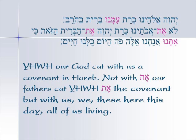In the middle line we're looking at 'Lo et avotenu.' We can't translate this Aleph Tav as a direct object because we're talking about cutting a covenant. If you make the Aleph Tav there a direct object marker, it's basically saying that Yahweh did not cut our fathers — which is not what's meant. The second Aleph Tav is 'et ha-brit,' which is the direct object marker. He cut what? The covenant, the brit. So the first Aleph Tav, 'Lo et avotenu,' we have to translate in English as 'with.'